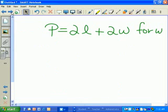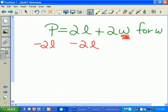Let's do another one. P equals 2L plus 2W for W. Our ultimate goal is to get this W by itself. First, we want to get the 2L on the opposite side of the equal sign, away from the 2W.